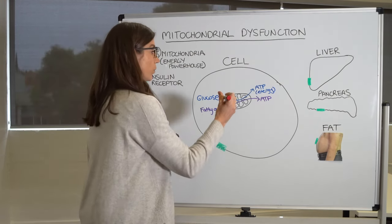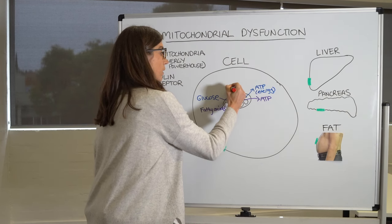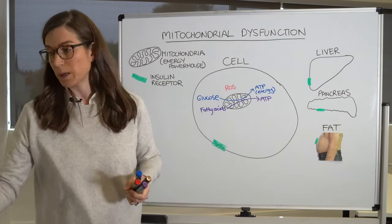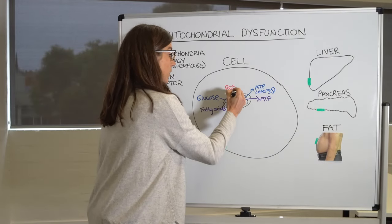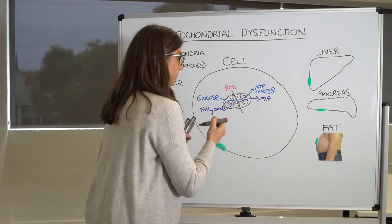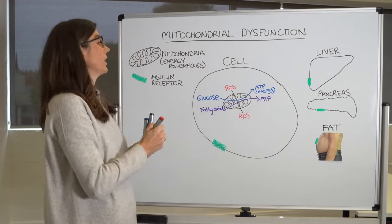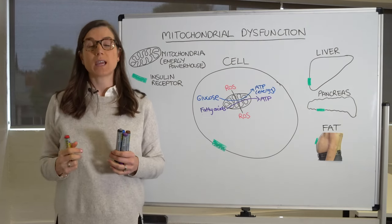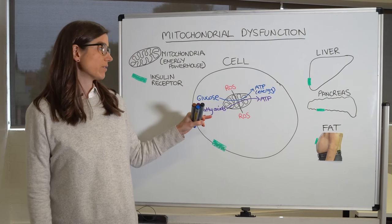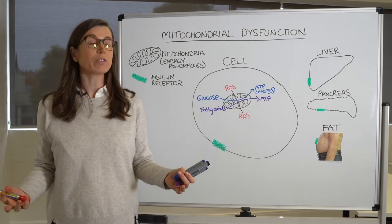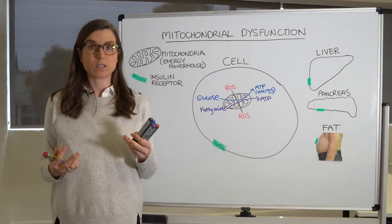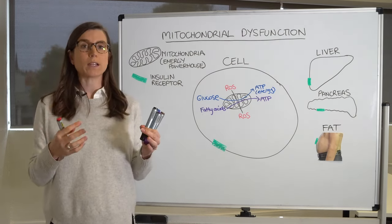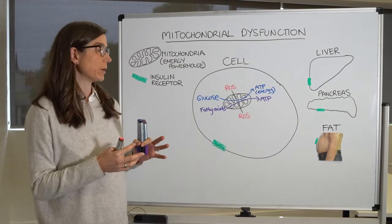A byproduct of this reaction is the generation of what we call free radicals, or reactive oxygen species — I'll use them interchangeably, they're the same thing. We all hear that free radicals are bad, and yes, in excess they are, but to burn glucose and fat to produce energy — which is essential for life — you are going to produce a small amount of these. Normally the cell has a way to regulate and soak them up so they don't cause any damage.